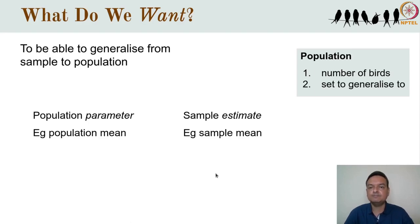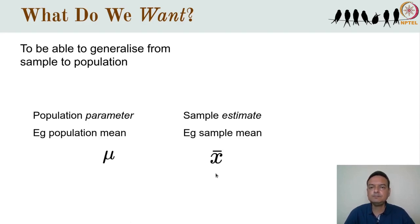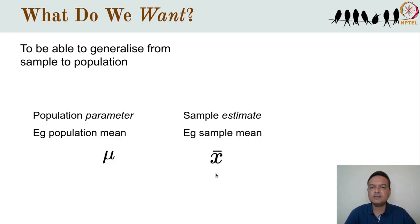Some jargon is needed here. That aspect of the population which we are trying to measure is called the parameter, and what we actually measure through our sample is called the estimate. Another thing that is useful to know is a bit about conventions of statistical notation. One convention is that population parameters are usually written in Greek letters — for example, the population mean is often written as mu. Samples are denoted in Latin letters, and the sample mean is written as x-bar.